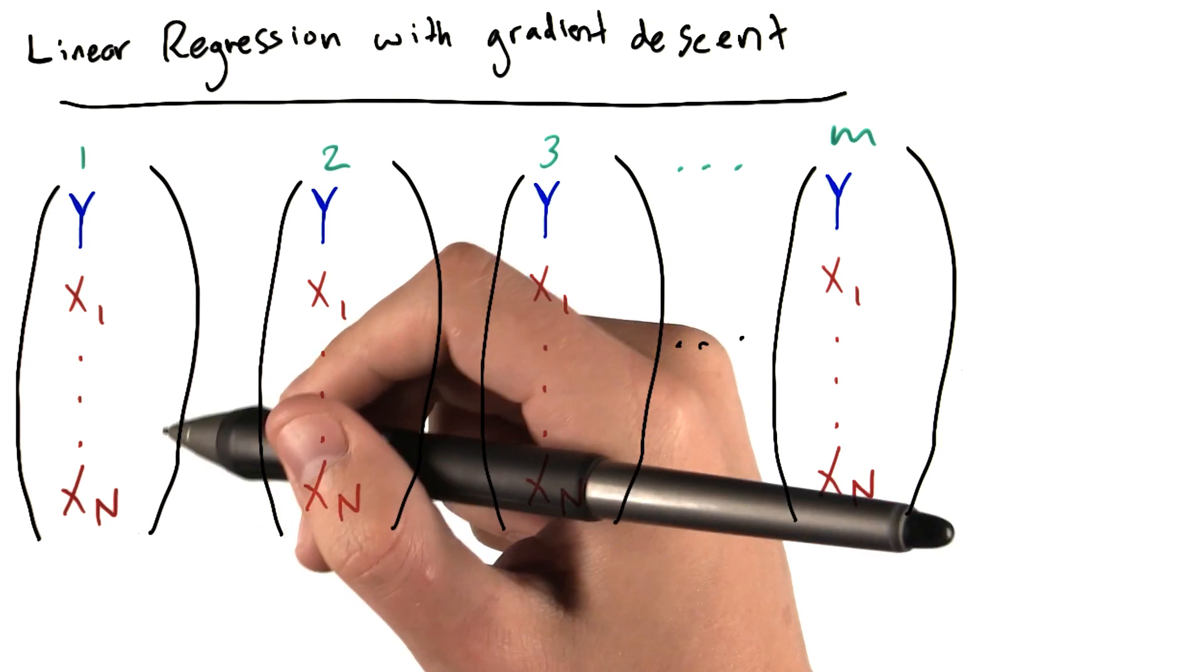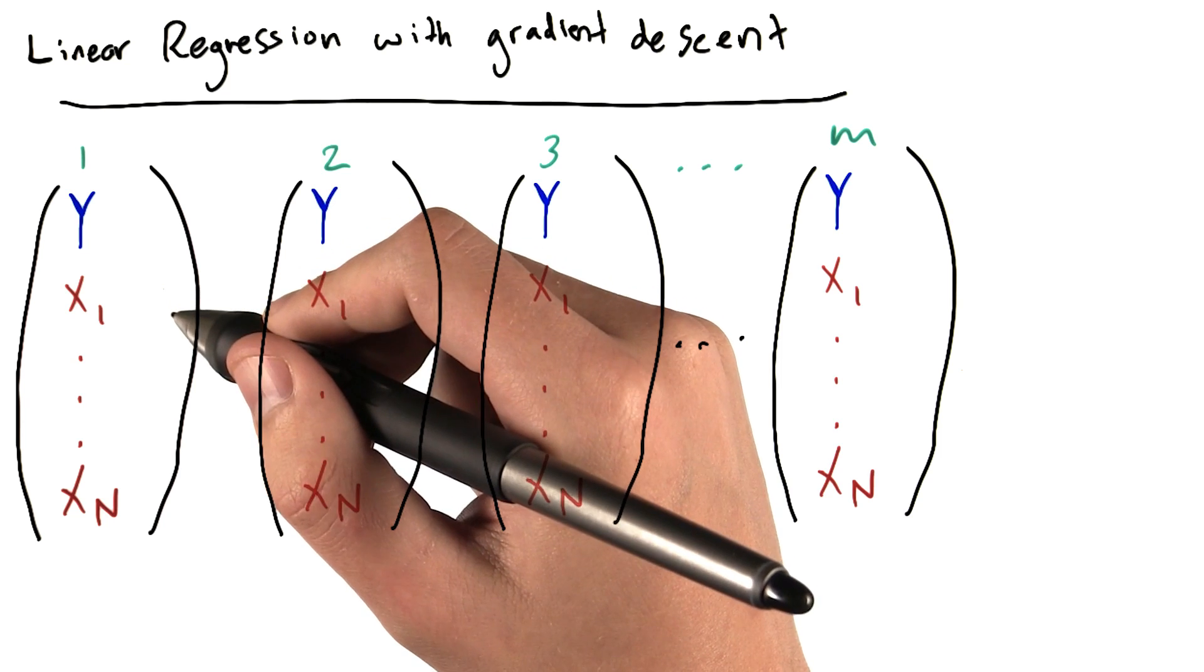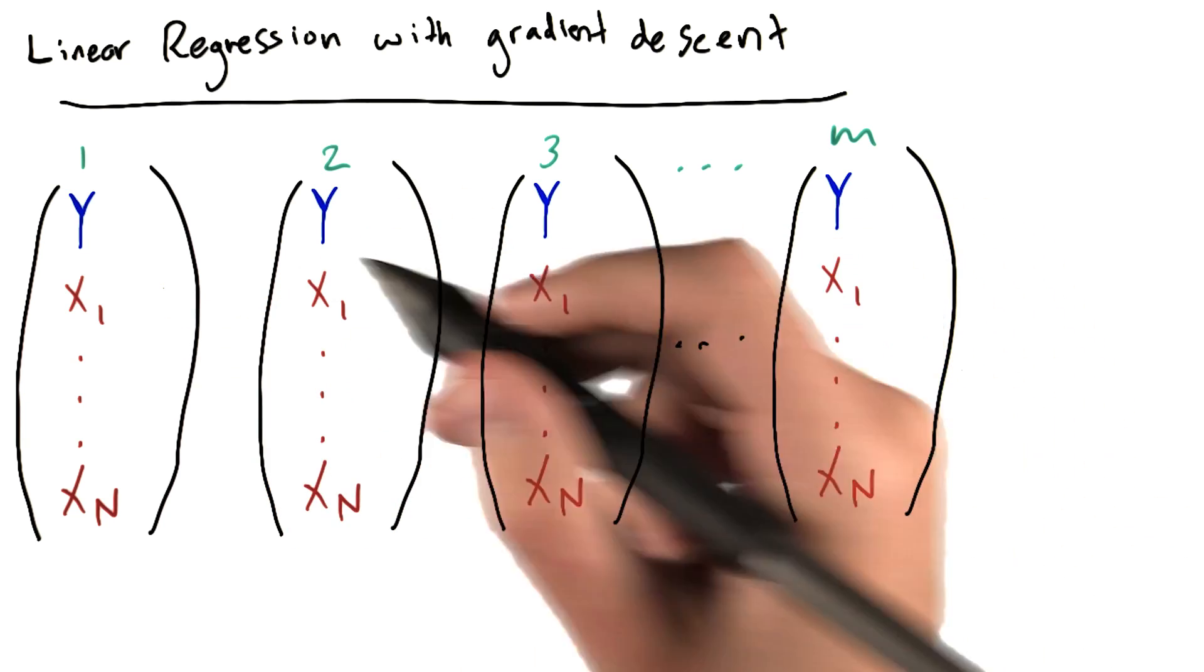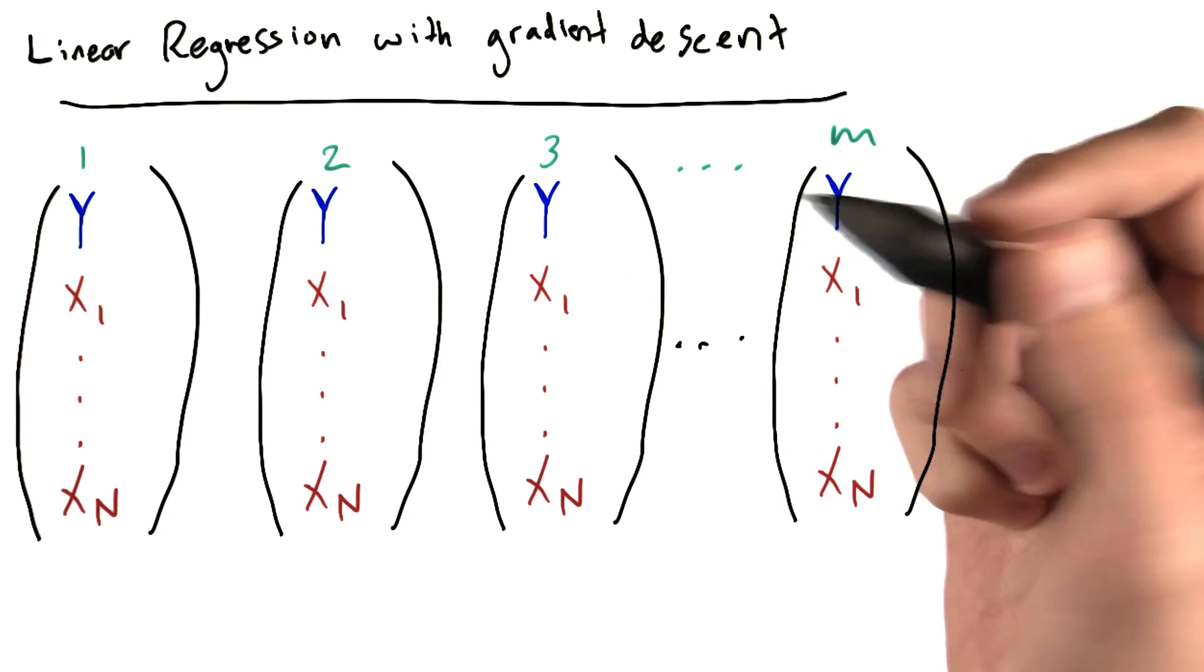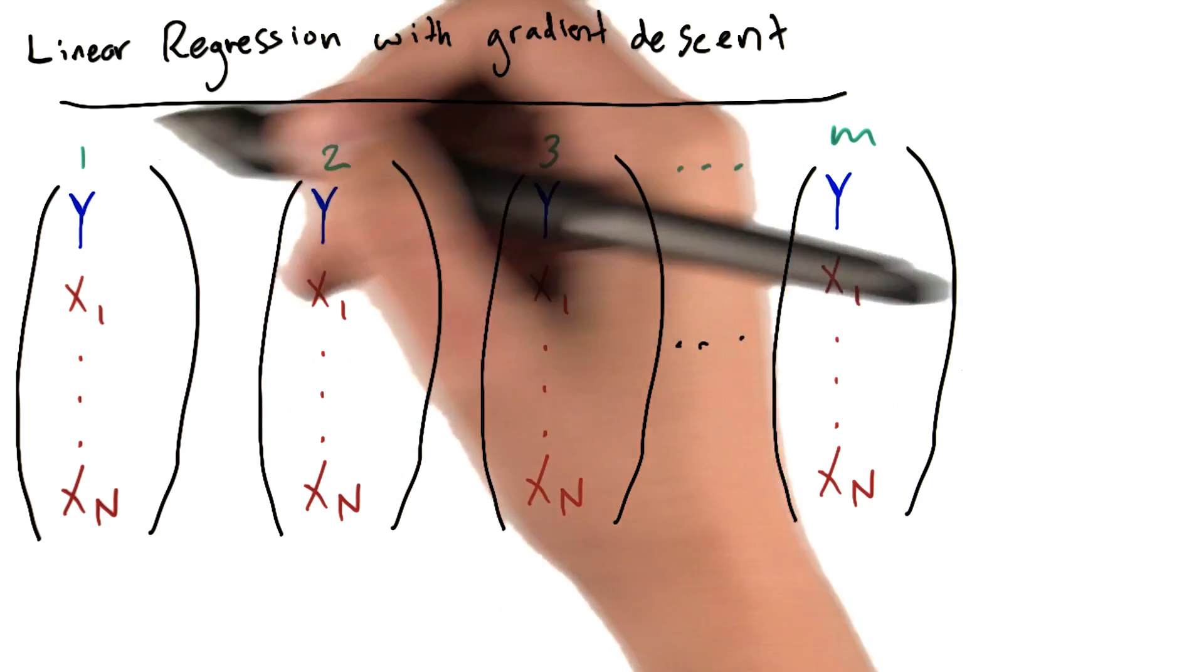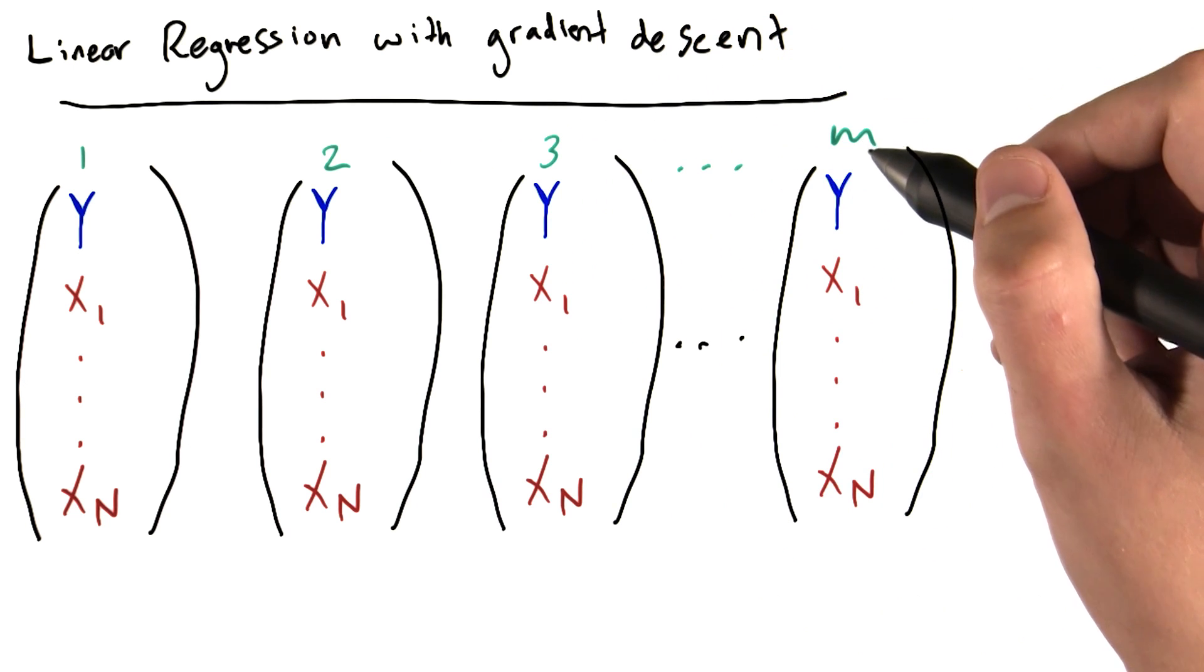So in our baseball example, y is the lifetime number of home runs, and our x1 and xn are things like height and weight. Our 1 through m samples might be different baseball players. So maybe data point 1 is Derek Jeter, data point 2 is Barry Bonds, and data point m is Babe Ruth.